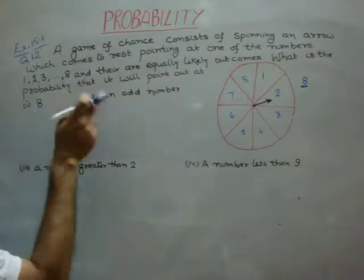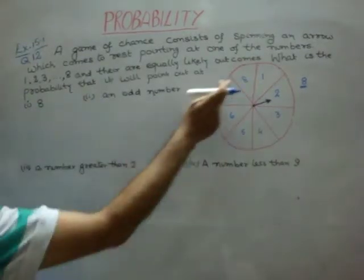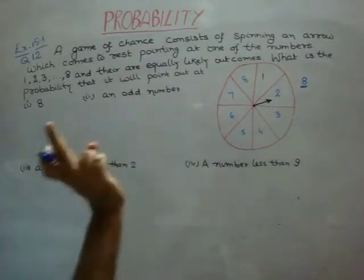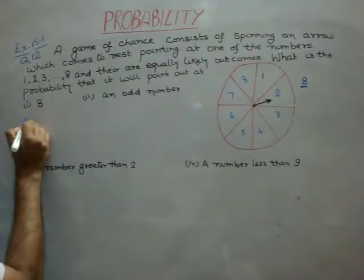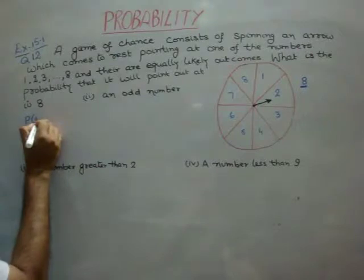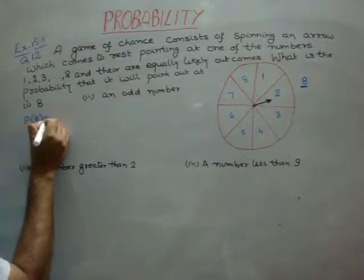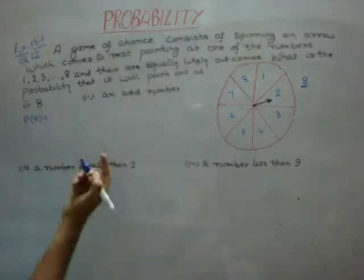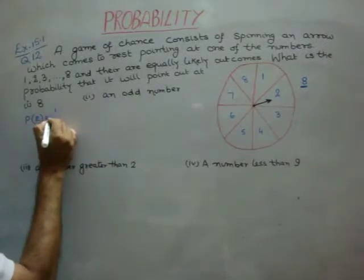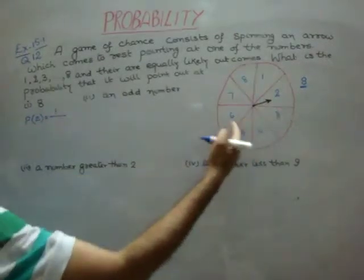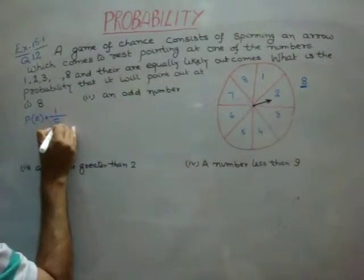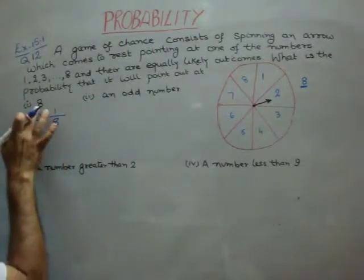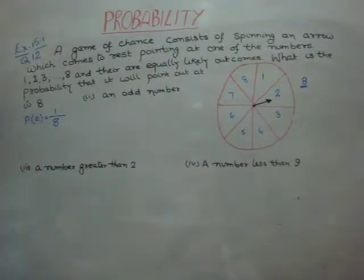Now, the probability is you have to take out 8. How many in this? Only 1 time, so we will write here, P(E) is equal to 8 is one time only, so 1, but the total numbers are 8, so 1 by 8 is the probability of 8 to come out.